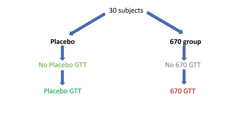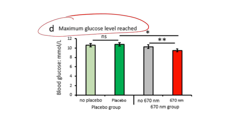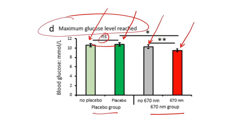Looking at all four groups and the maximum glucose level reached: the placebo group on the left versus the 670 nanometer group on the right — the two without any light were not different, but the one with the light turned on was different. What we found is that just 15 to 20 minutes of this light could actually mitigate the increase in blood sugar. You may want to consider eating outside or in a setting with a lot of light. This was a randomized controlled trial — the highest level of evidence.